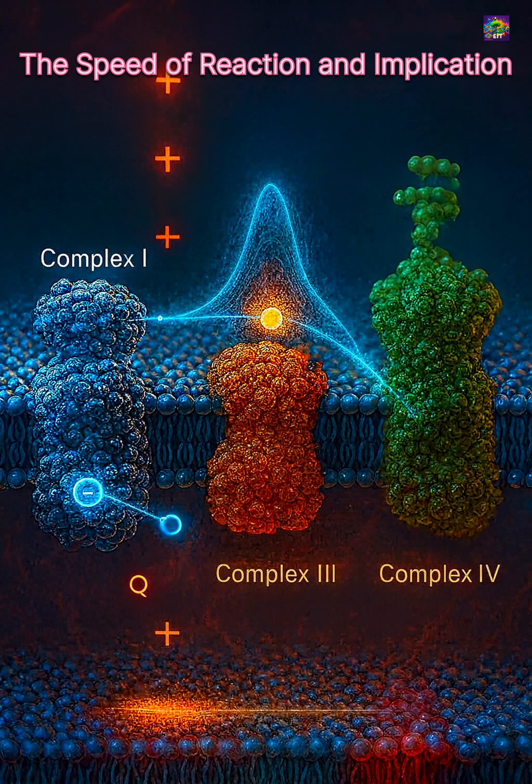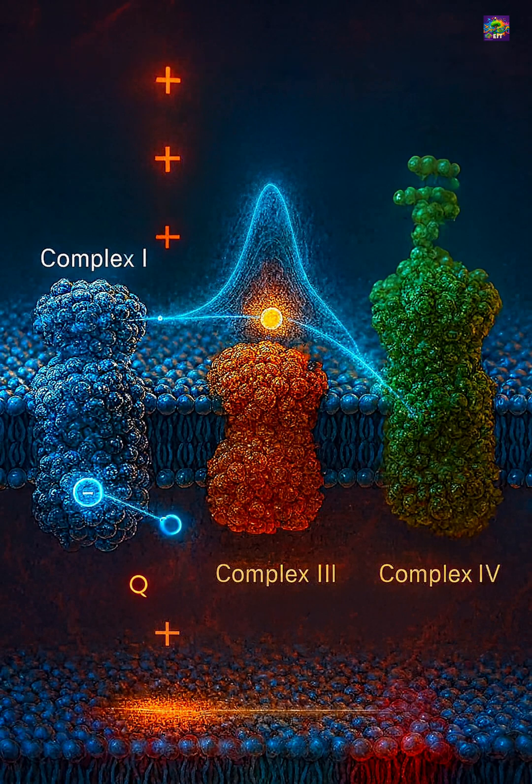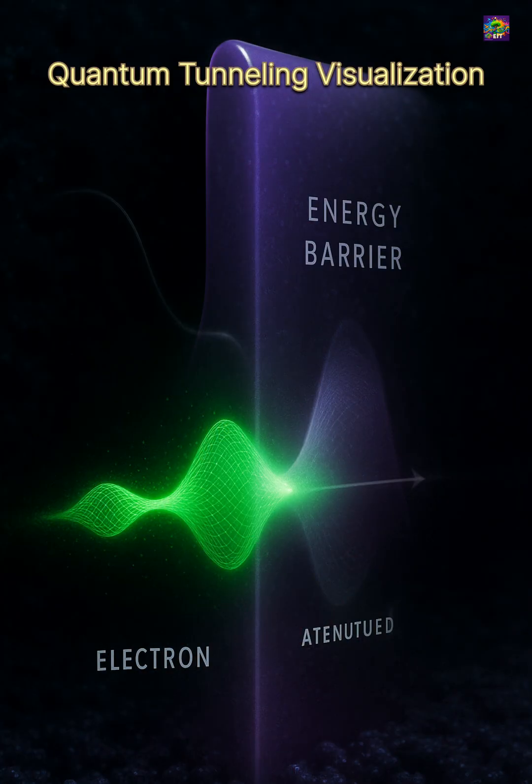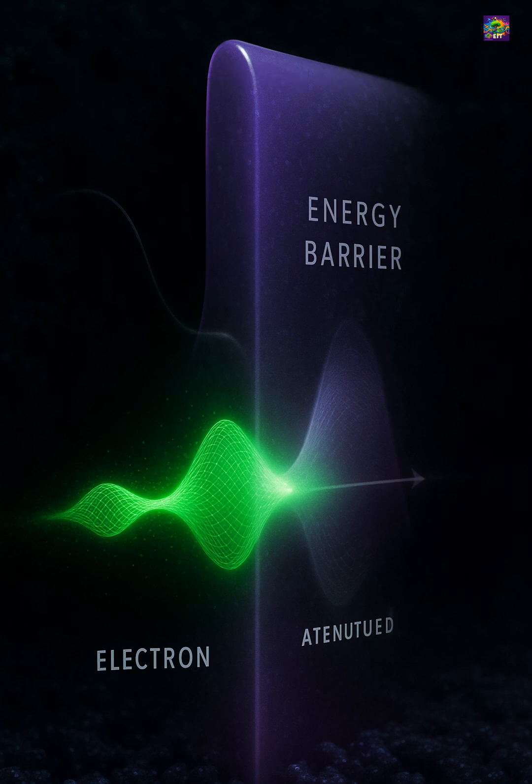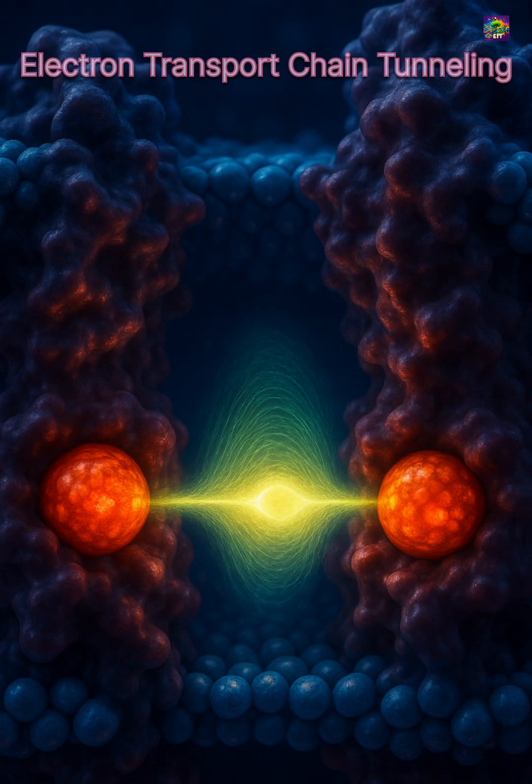Even then, the reaction happens quickly. The reason is quantum tunneling. In tunneling, an electron behaves more like a wave than a particle. Instead of climbing over an energy barrier, it can pass through it and appear on the other side.